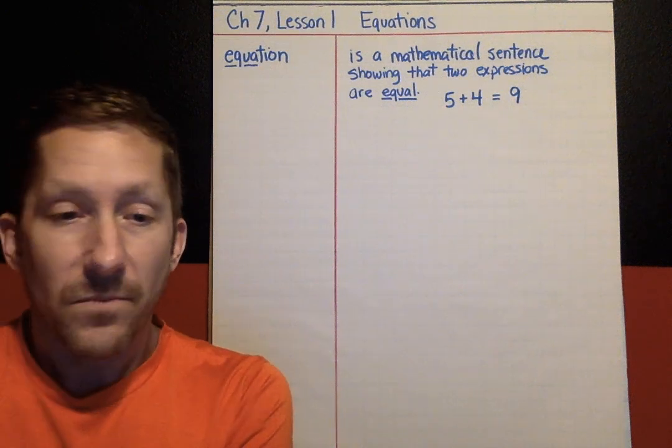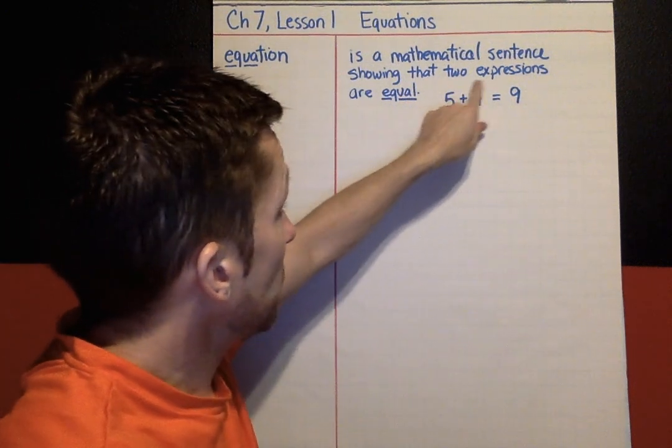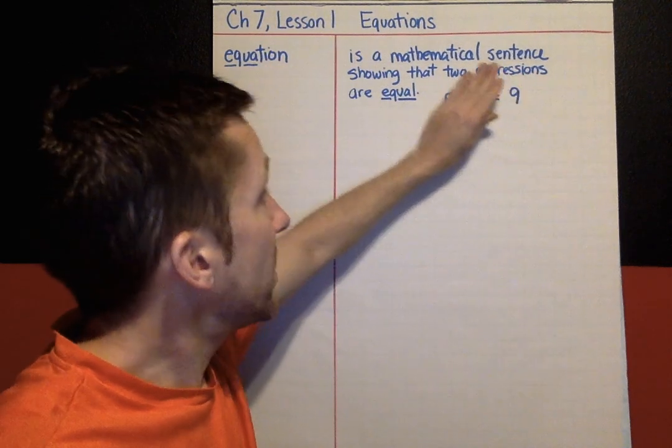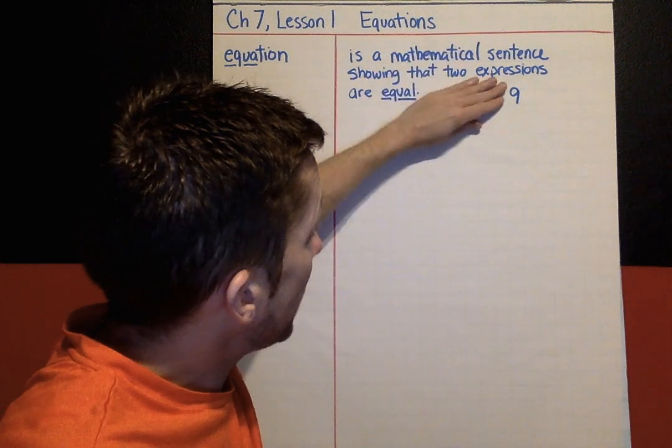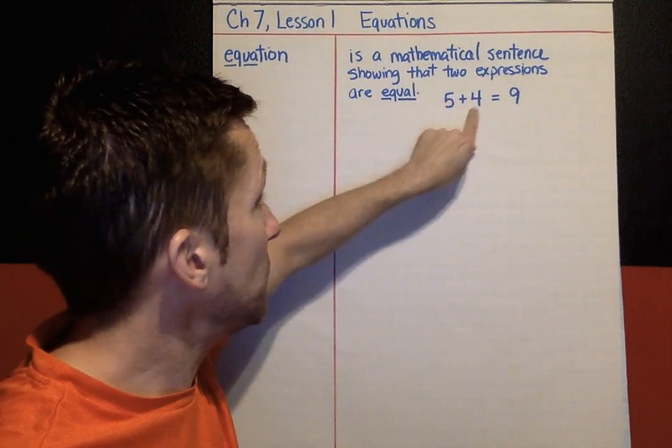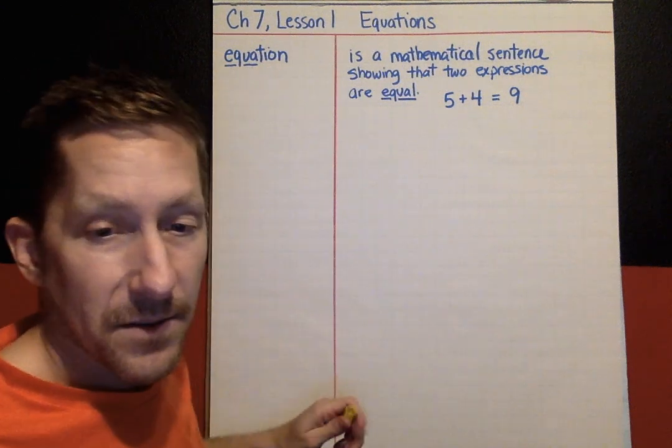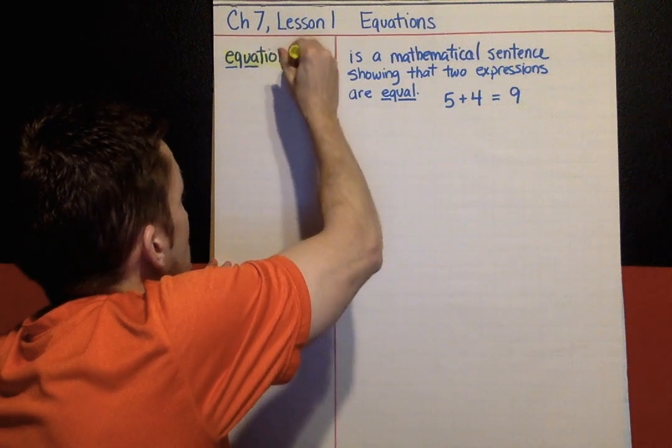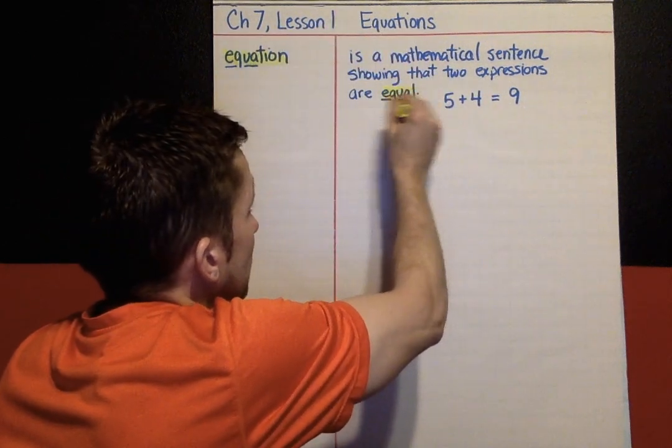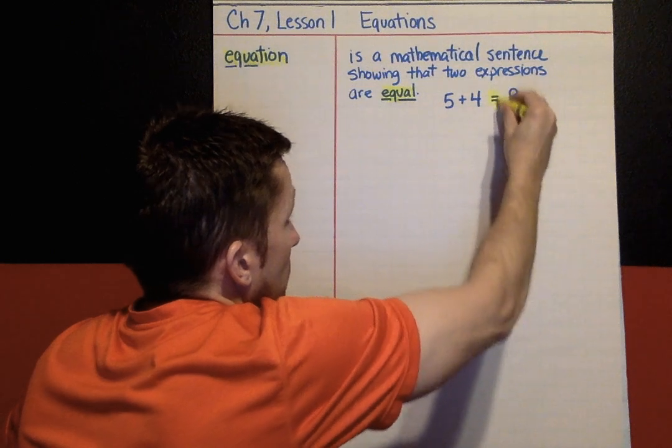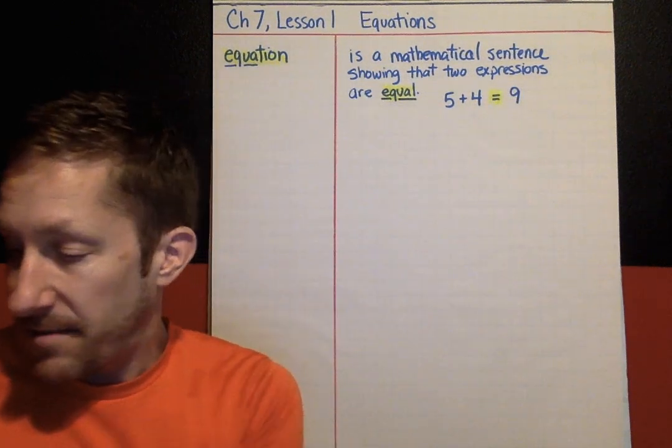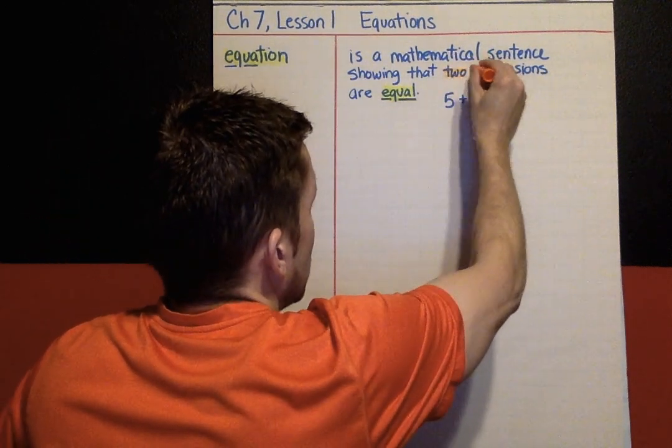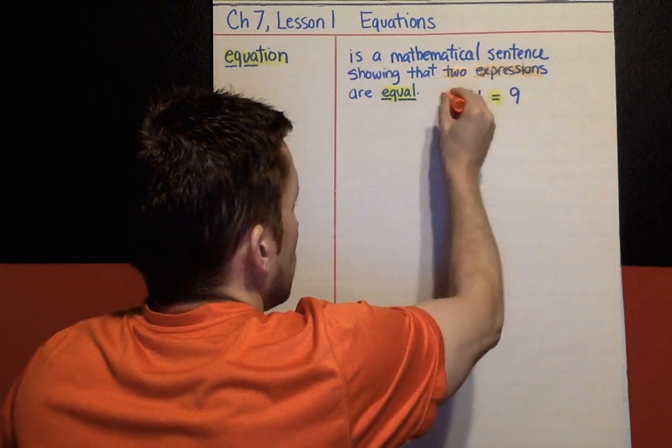Two expressions. If I cover up the equal sign in the nine, there's an expression. And if I cover up the equal sign in the five plus four, there's another expression. We've got two expressions that are equal. So, that is what an equation is. An equation has to have an equal sign and it has to have stuff on both sides of the equal sign that make it work.